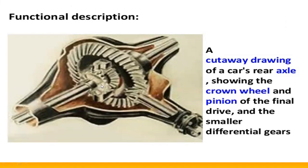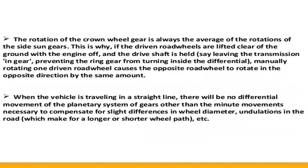The crown wheel gear is attached to the sun gear and planet gear. Based upon this sun gear and planet gear, the wheels are moving at different sides of the road. The speed is increased and decreased on this differential to the automobile. The rotation of the crown wheel gear is always the average of the rotations of the side sun gears — it maintains the average speed rather than very high or very low speed.